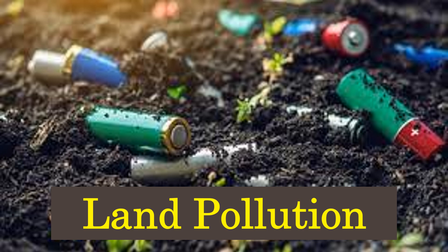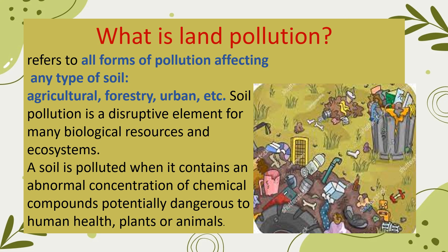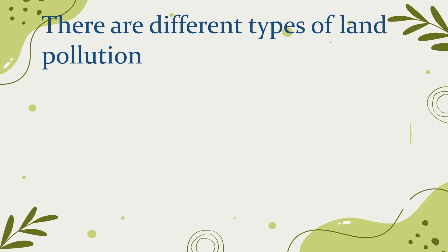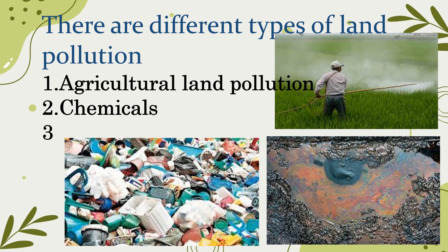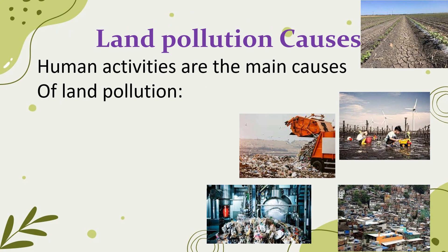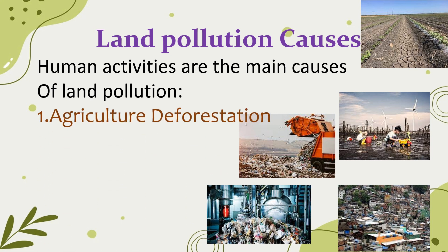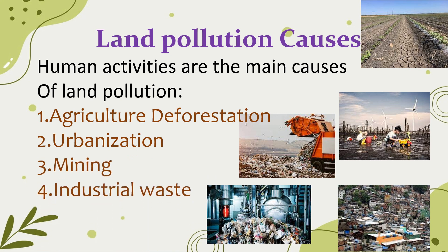The third type of environmental pollution is land pollution. Land pollution refers to all forms of pollution affecting any type of soil — agricultural, forestry, urban, etc. Soil pollution is a disruptive element for many biological resources and ecosystems. A soil is polluted when it contains an abnormal concentration of chemical compounds potentially dangerous to human health, plants, or animals. Types of land pollution include agricultural land pollution, chemicals, and solid waste. Human activities are the main causes, including agriculture, deforestation, urbanization, mining, industrial waste, and waste disposal.